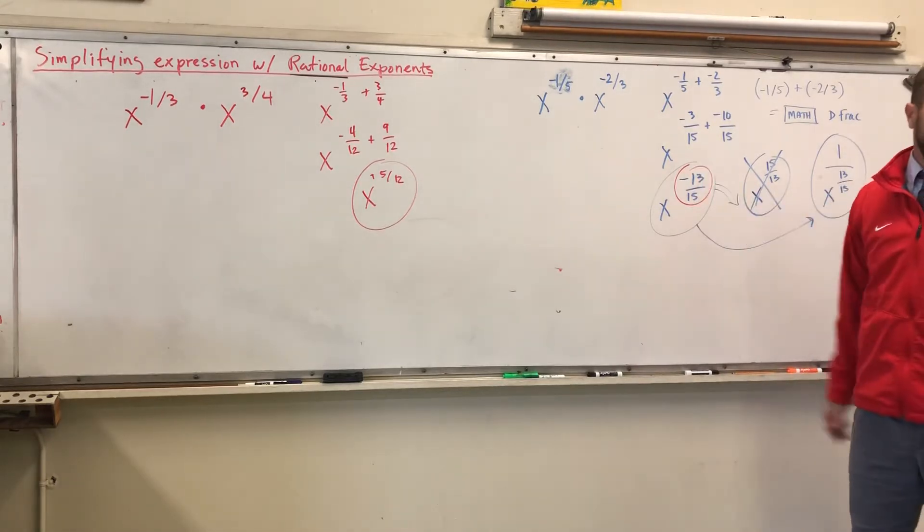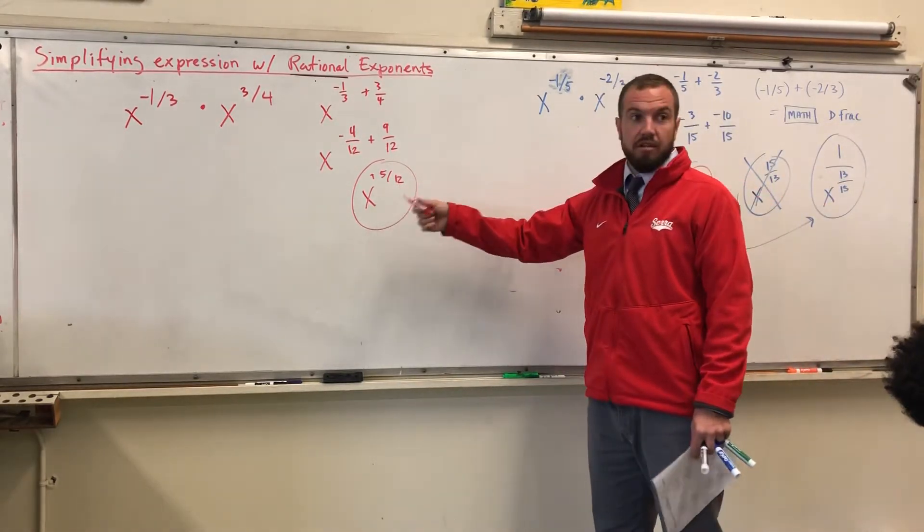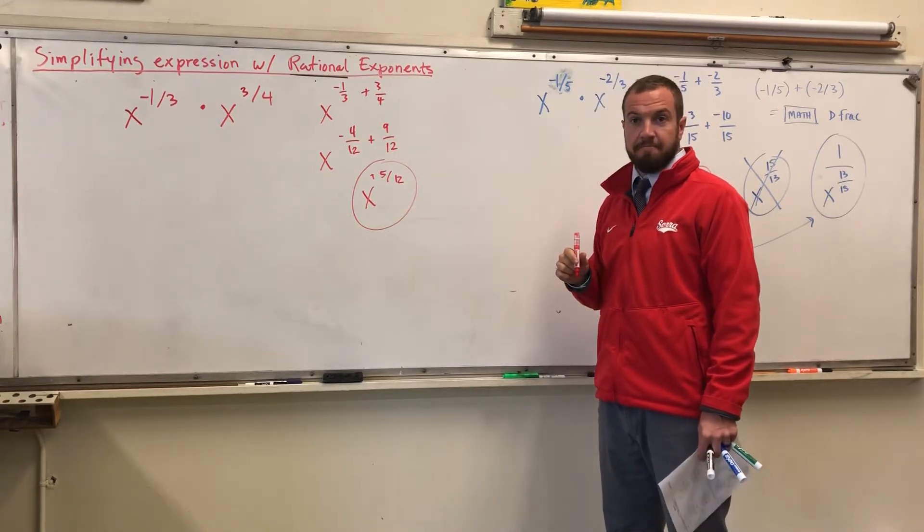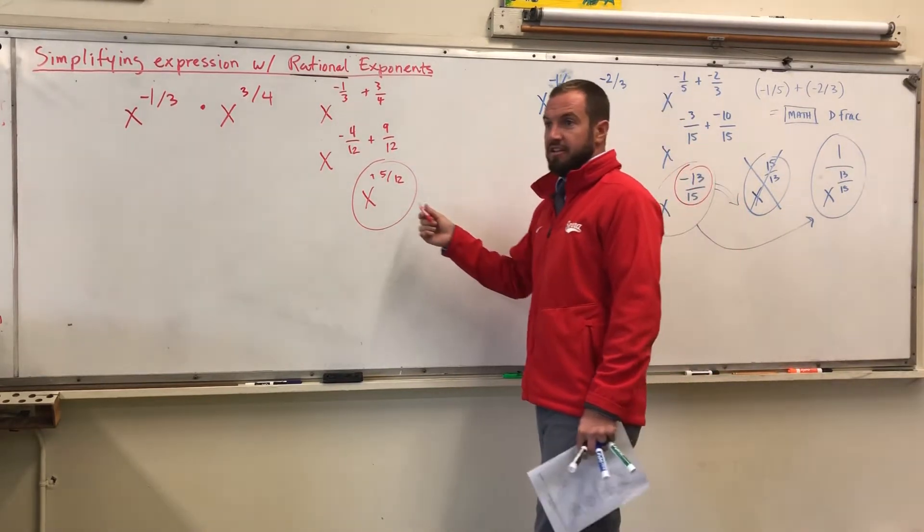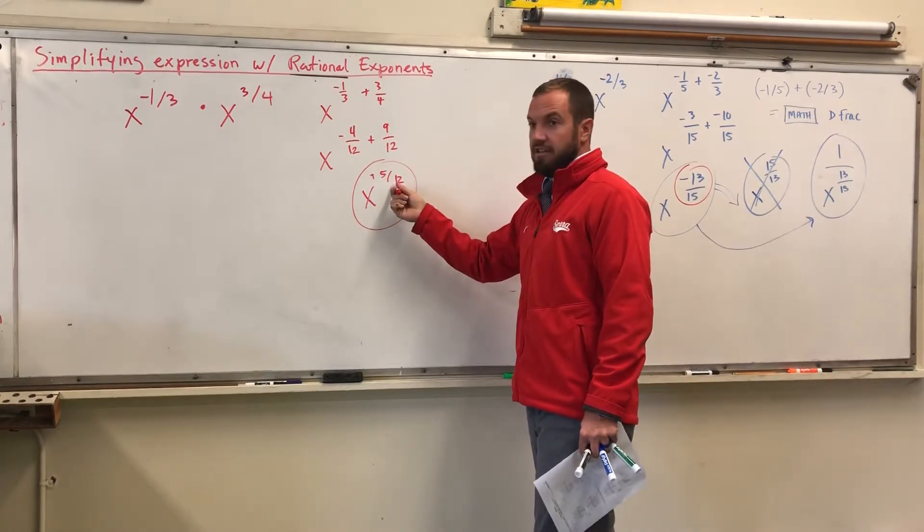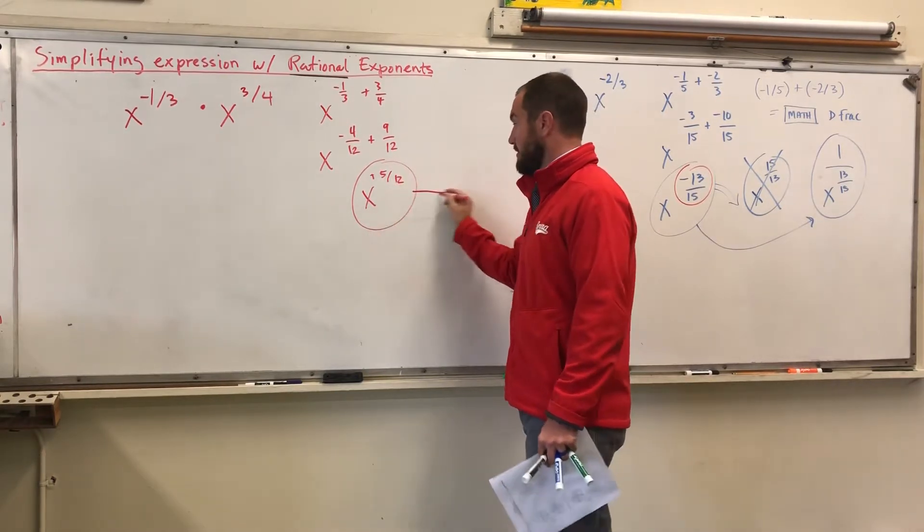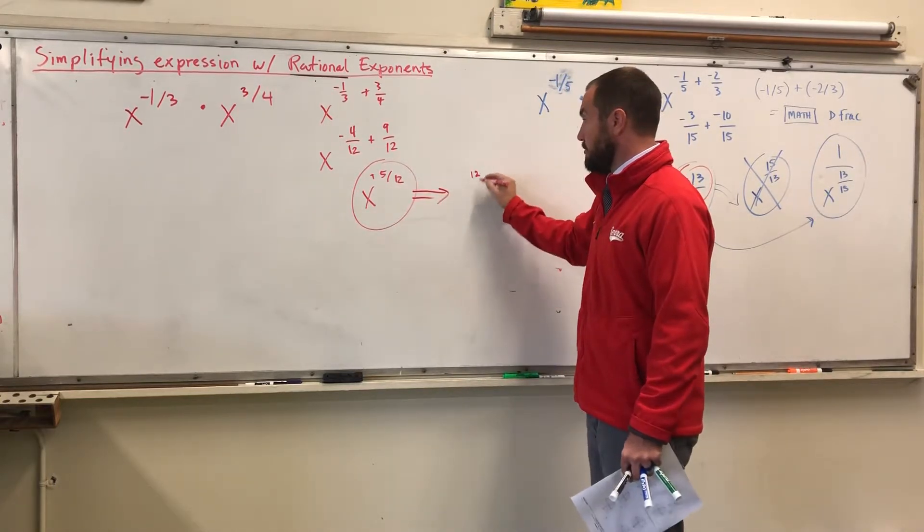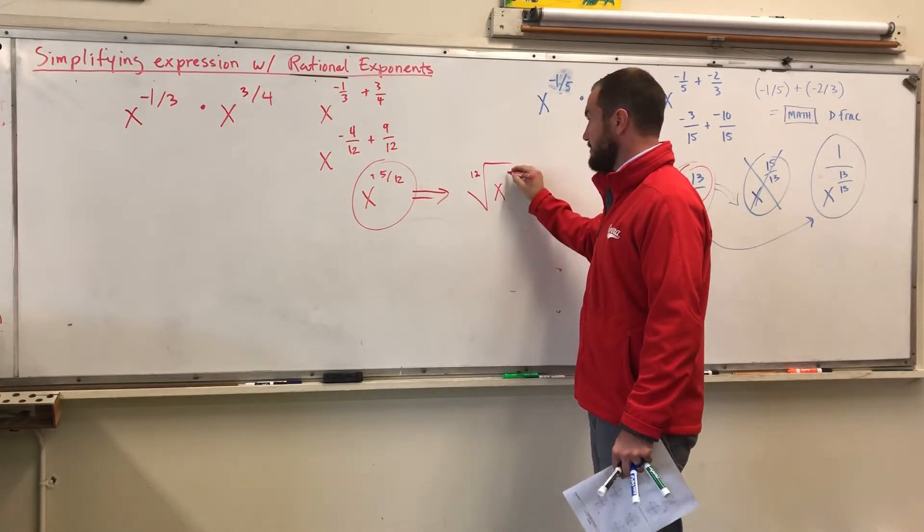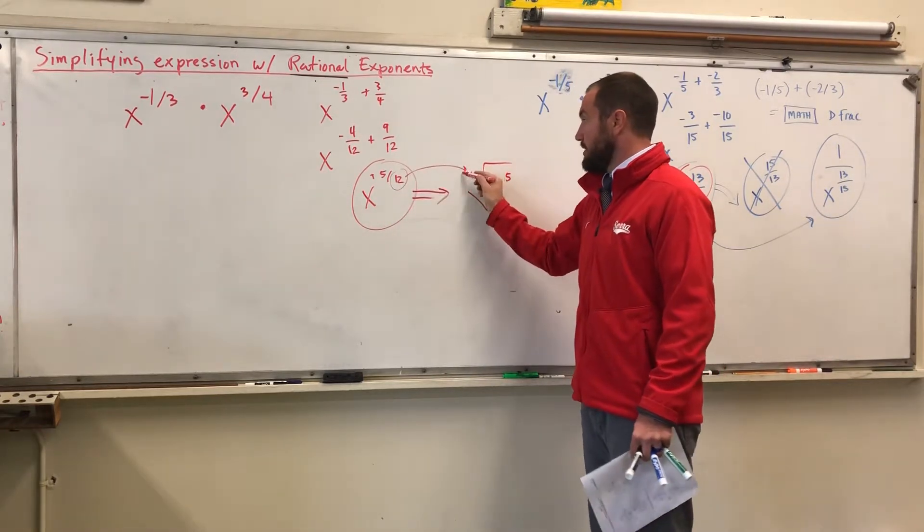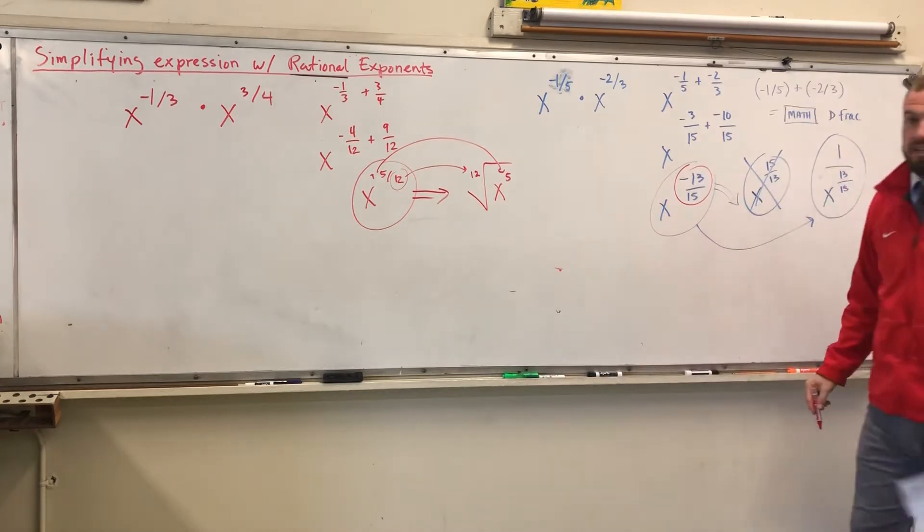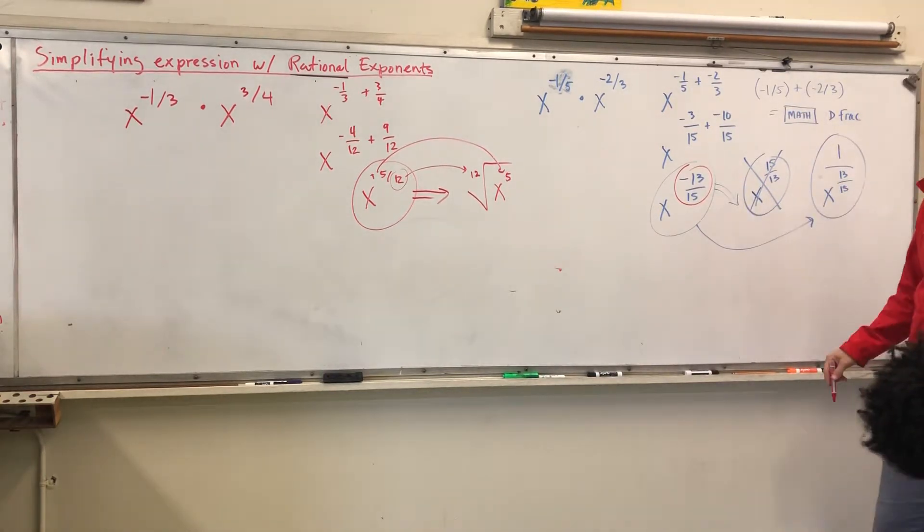So we're not going to put it over one. So we're saying, and don't forget, we've gone over converting this, let's say, into radical form, where you have the twelfth root of x to the fifth, where this bottom number becomes a root, and this stays in here. And we've looked at that, if you're going to simplify that even further.